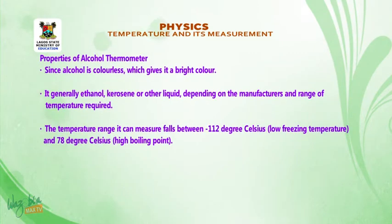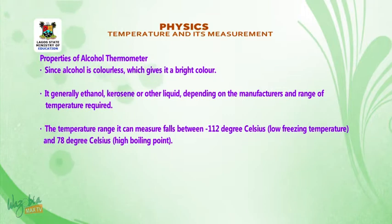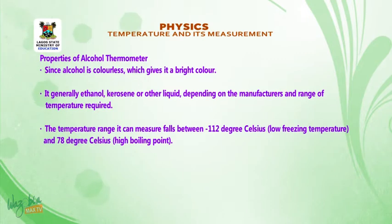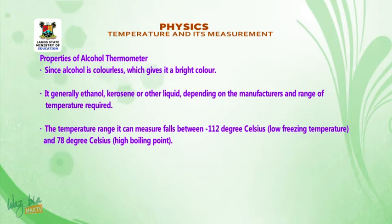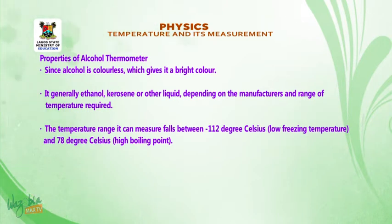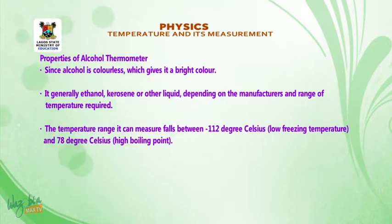Properties of the alcohol thermometer: since alcohol is colorless, it is generally dyed and may be ethanol, kerosene, or another liquid depending on the manufacturer and temperature range required. The temperature range it can measure is between minus 112 degrees Celsius (low freezing point) and 78 degrees Celsius (high boiling point).